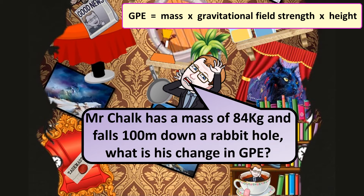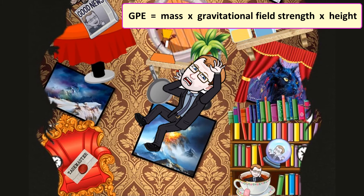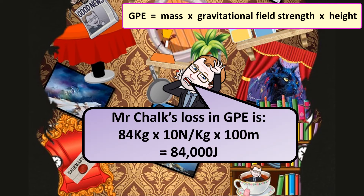If Mr. Chalk has a mass of 84 kilograms and falls down a 100-meter rabbit hole, what is his change in GPE? Mr. Chalk's loss in GPE would be 84 times 10 times 100, which gives 84,000 joules.